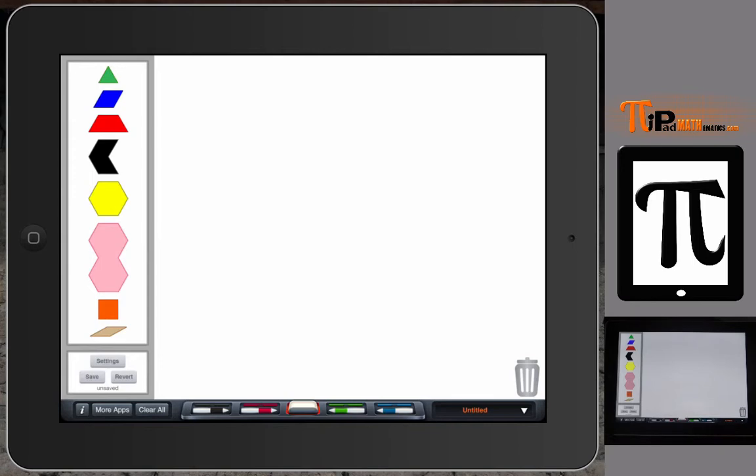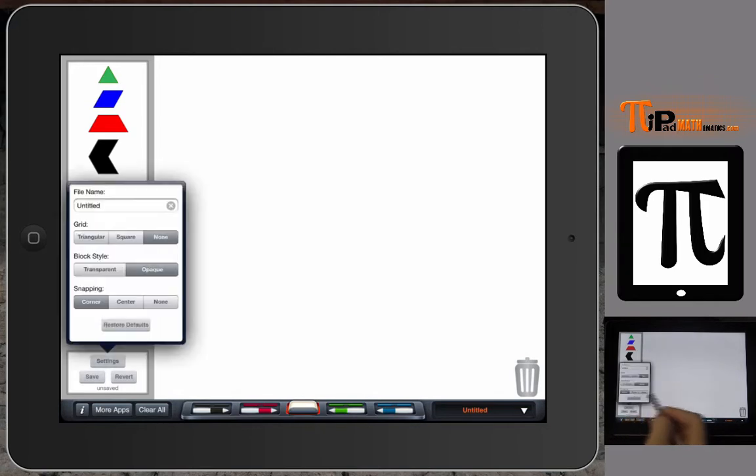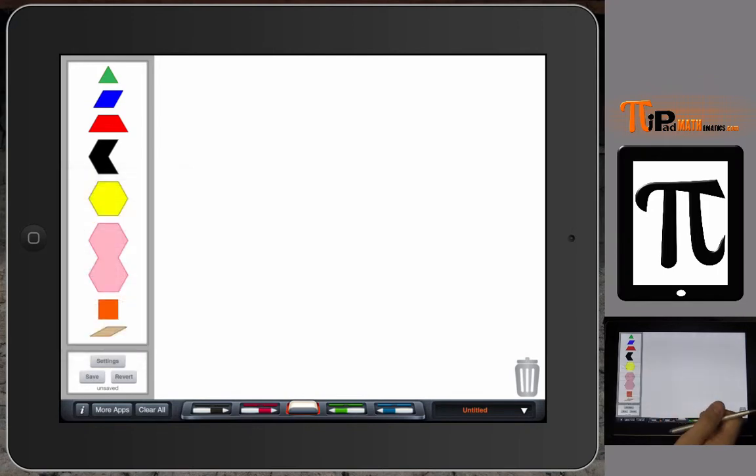Now I have the app set up in certain settings right now that I like to start off with, which is no grid, opaque, and it snaps at the corner. Of course with rotations and reflections, especially when you are building into the older grades, middle school and high school, we are going to want to have something that can illustrate where these rotations end up or where the points on our shapes end up.